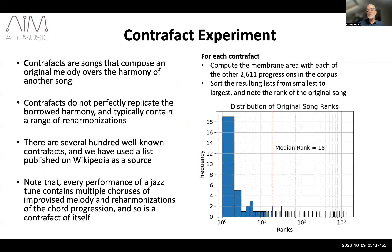To test the metric, we performed an experiment with a list of 80 well-known jazz contrafacts. Contrafacts are songs that compose a new melody over an existing harmony from another song. That said, the harmony of a contrafact is typically not identical to that of the original song, often containing many reharmonizations. For each contrafact, we compute its membrane area with each of the other 2,611 progressions in our corpus and note the rank and closeness of the original song to its contrafact. As some original songs have inspired multiple contrafacts, we do not expect original songs to always have the number one rank. The results are represented by the histogram shown in this figure. The median rank is 18, meaning that half of the original songs rank very close within the top 0.7% in harmonic similarity to the contrafacts.